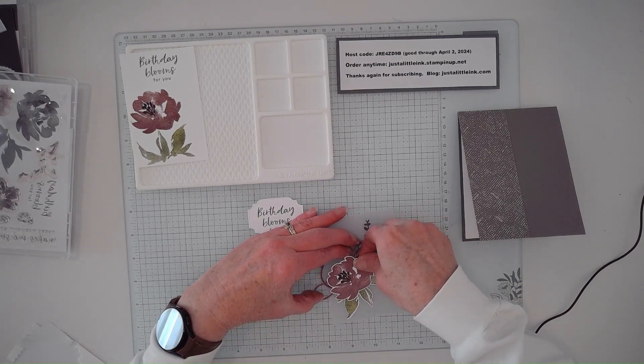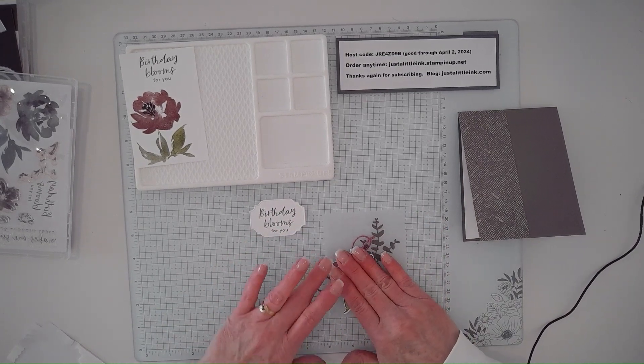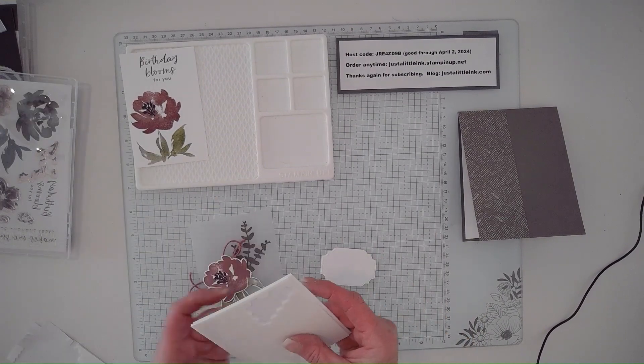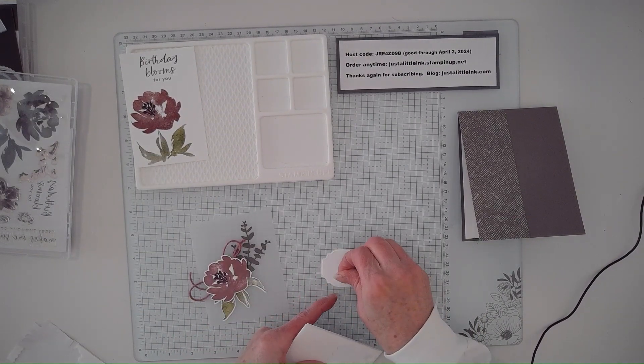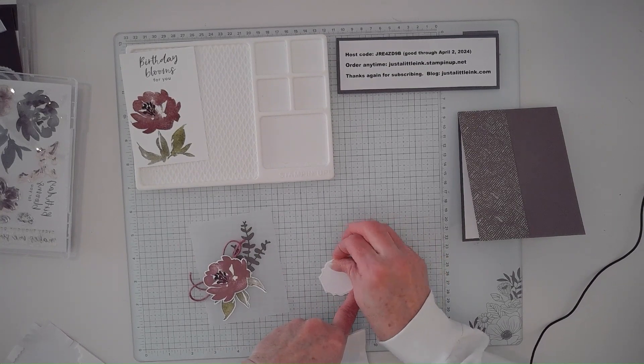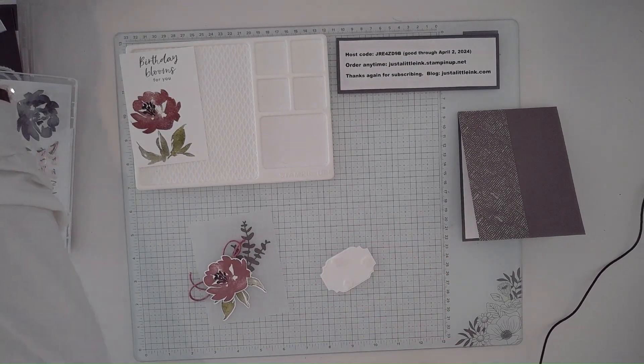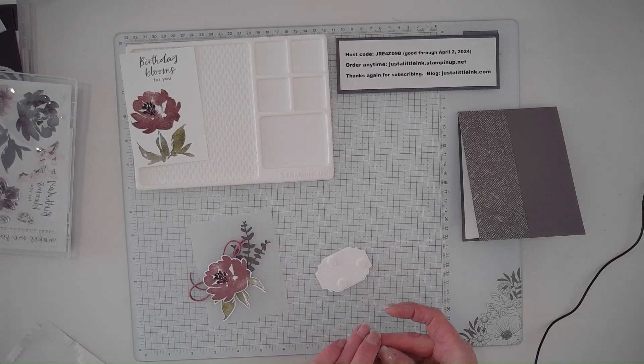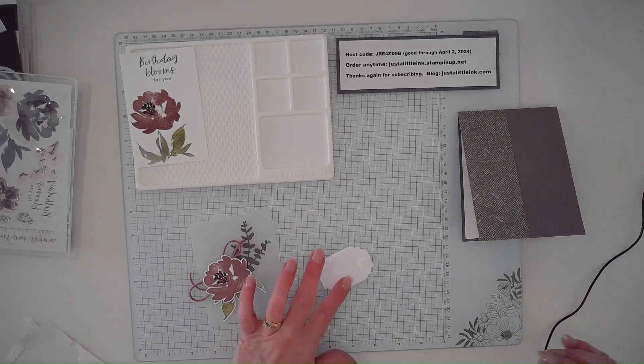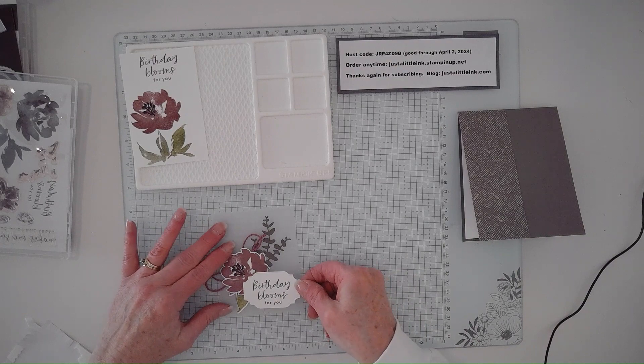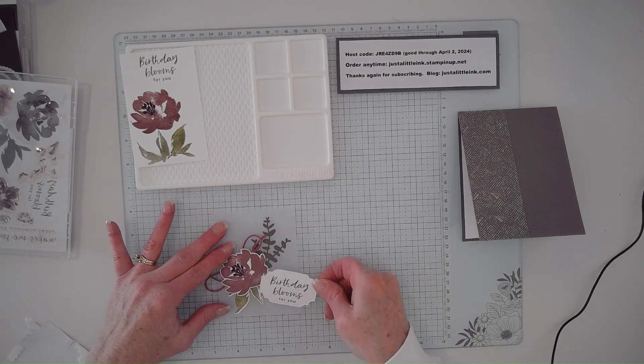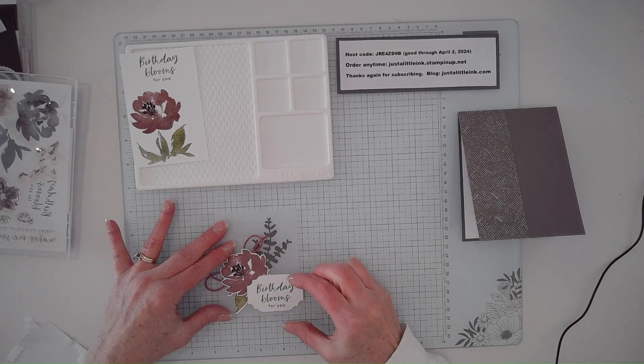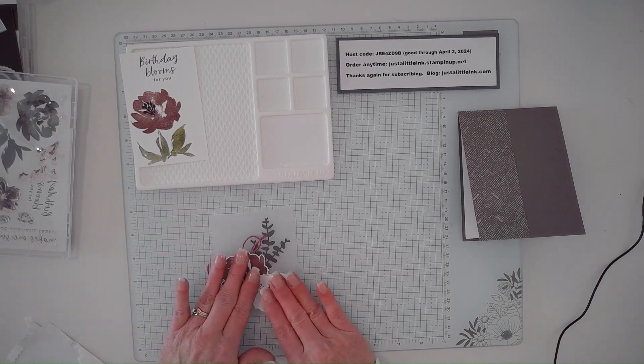I'm going to take that flower and stick it on top. This is going to come in over like so. I've got the flower, and then I'm going to put some dimensionals on the back of my greeting. I'm going to attach my greeting over here to the lower edge.